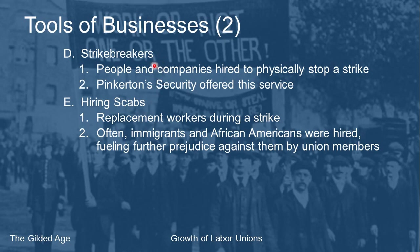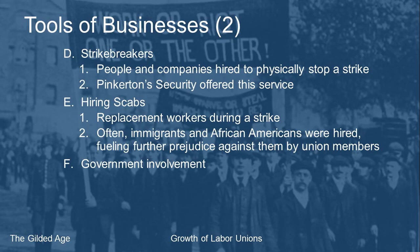Often both strikebreakers and scabs would be immigrants or African Americans. For many immigrants arriving in the United States during this period, working as a strikebreaker or replacement worker was the first job they could get — same for African Americans moving North. As a result, some of the original unions became anti-immigrant and discriminatory against African Americans.